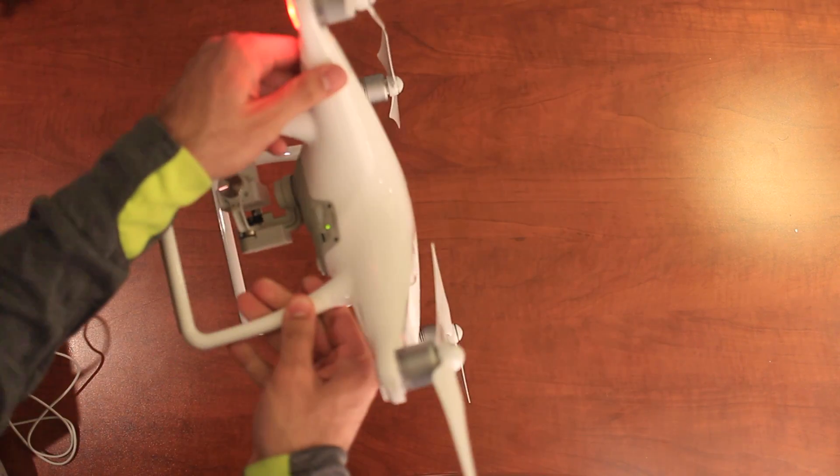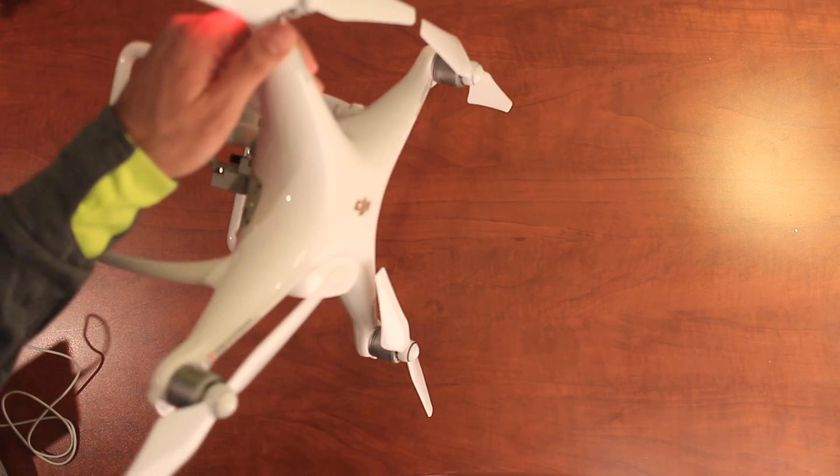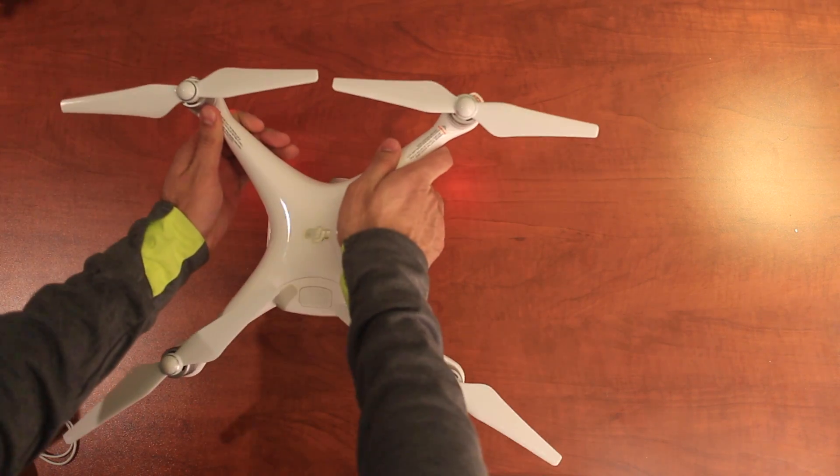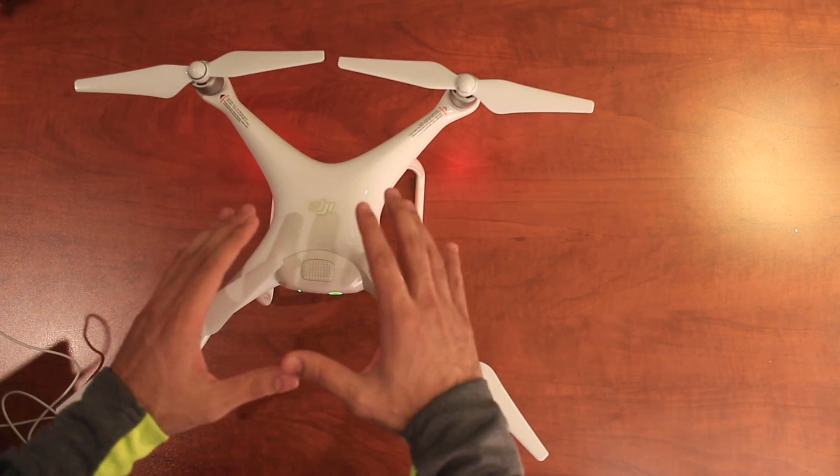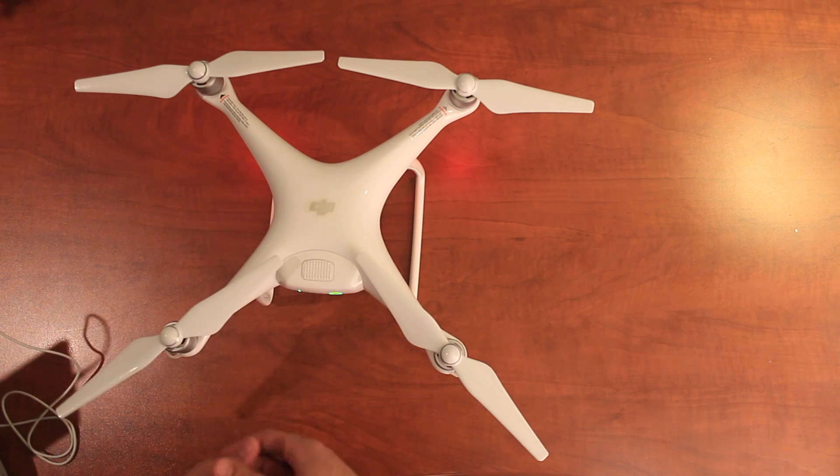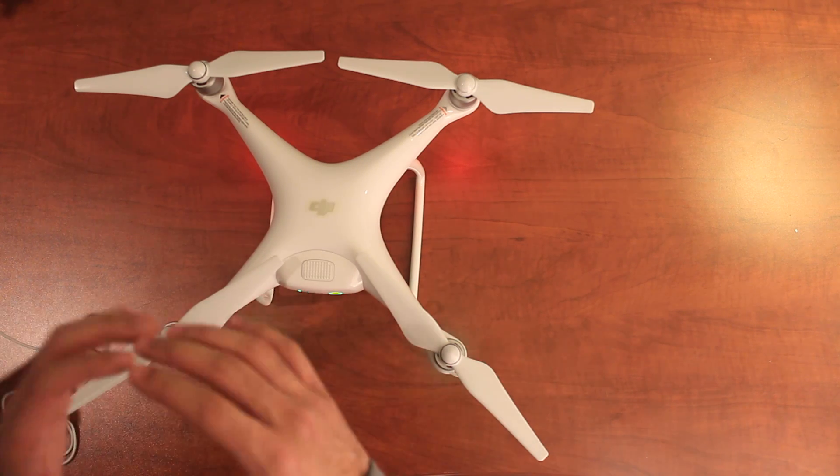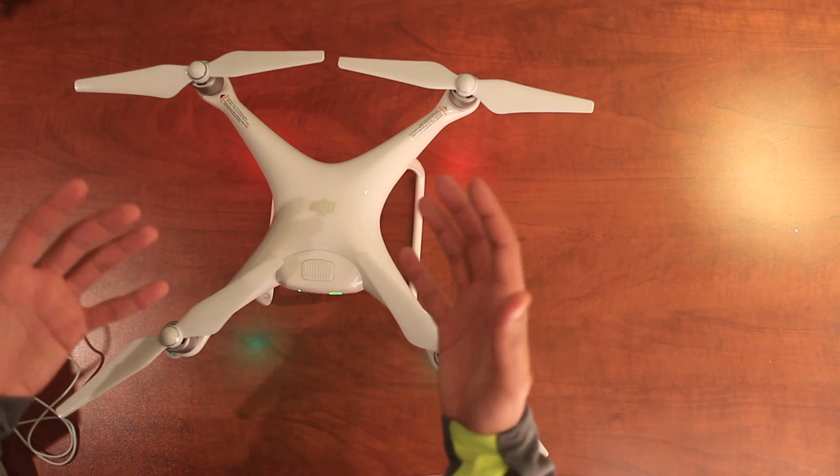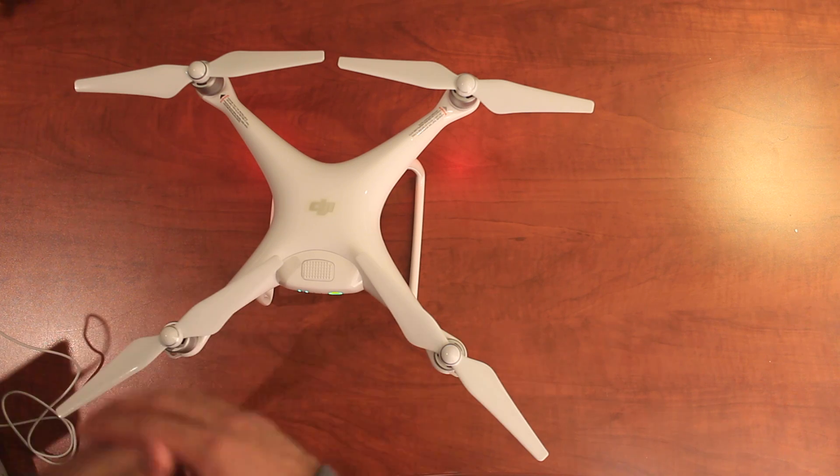I don't leave it at 360. I move it past to make sure I've completed the 360-degree circle, just to be sure. Then I place it down. Nine out of 10 times, it always works. That's how you do a compass calibration on the Phantom 4.